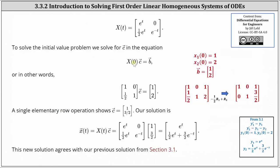To solve the initial value problem, we need to solve for vector c in the equation x of zero times vector c equals vector b. We're using x of zero because the initial conditions were given at t equals zero, and vector b is the vector with components one and two from the initial conditions. So when t is equal to zero, we have the two-by-two matrix with entries one, zero, one-half, one, times vector c equals the vector one, two. Solving the system, we have c1 equals one and c2 equals three-halves, and therefore vector c has components one and three-halves. Therefore our solution is the vector-valued function x of t equals the matrix-valued function x of t times vector c. Notice the solution agrees with the solution we found in section 3.1, which is included in blue on the right.